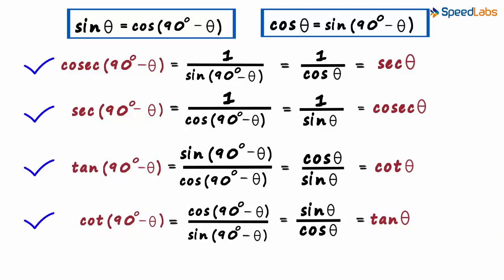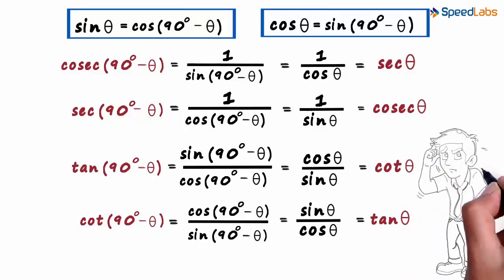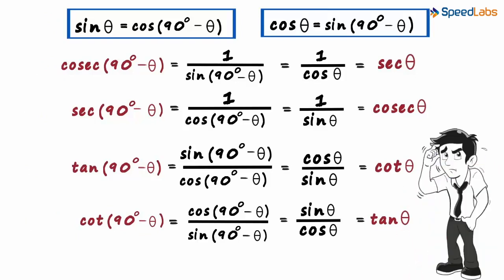We derived four relations in this video and two in the previous one. You would have noticed that there are a zillion formulae in trigonometry, and no matter how much you try to remember them, you always forget a few. Even if you understand a bit and try to derive the rest, it's the same story — you forget. We all forget.